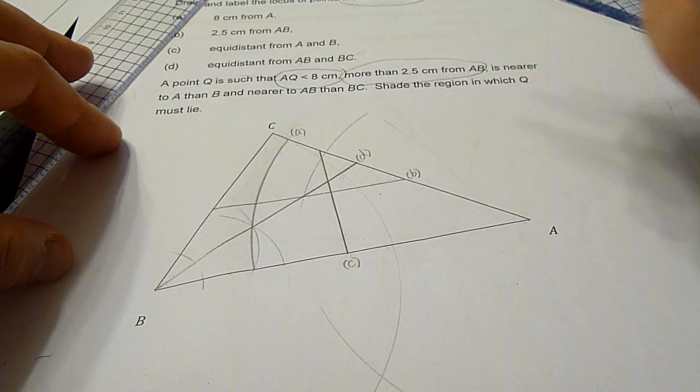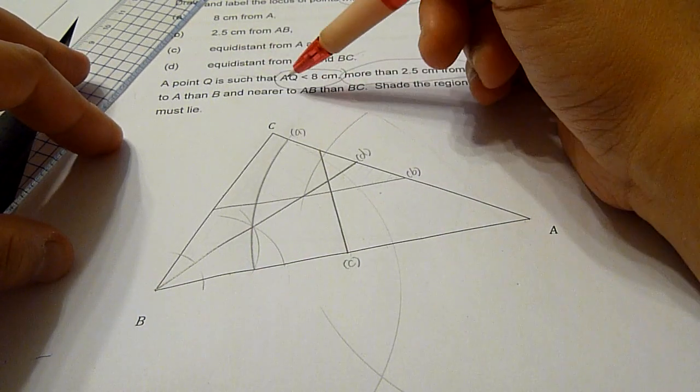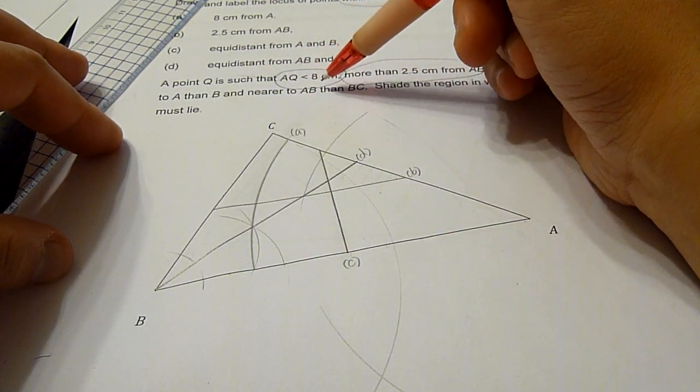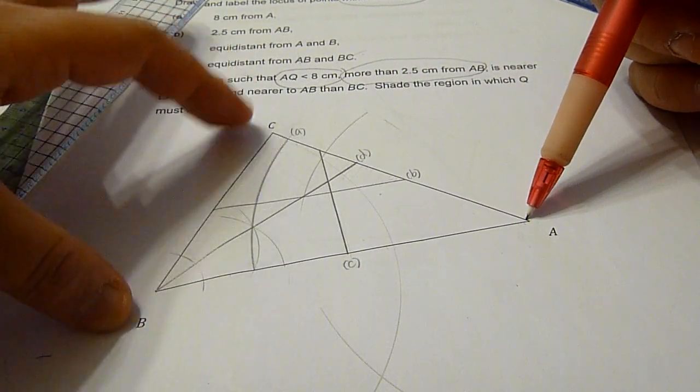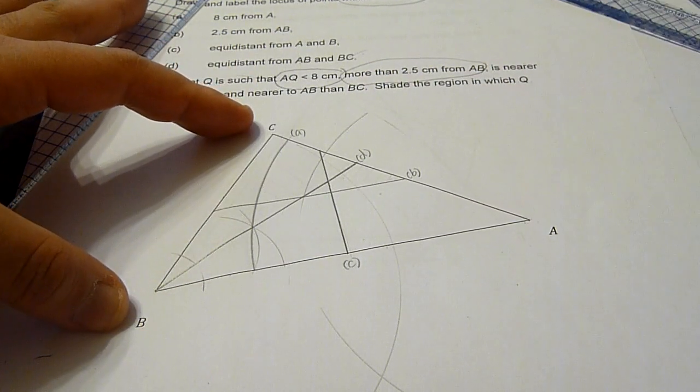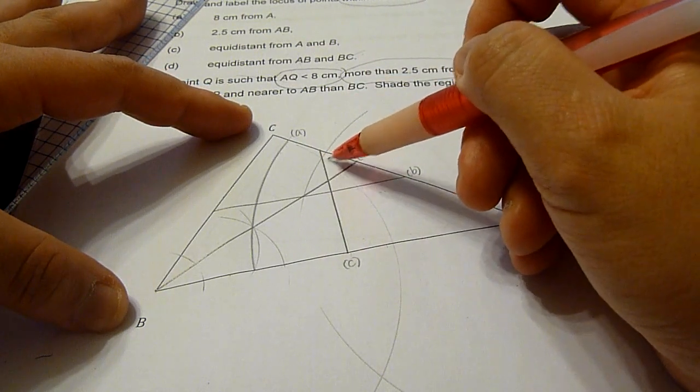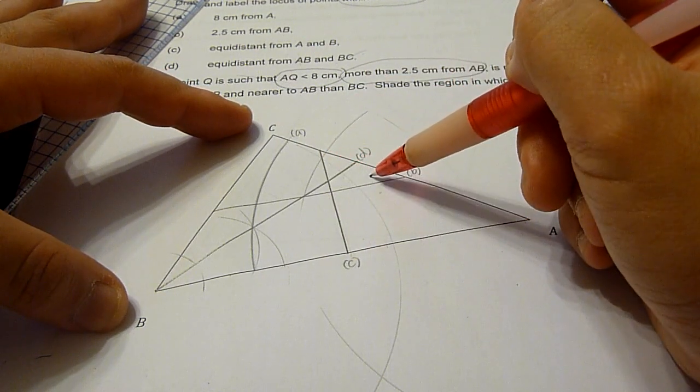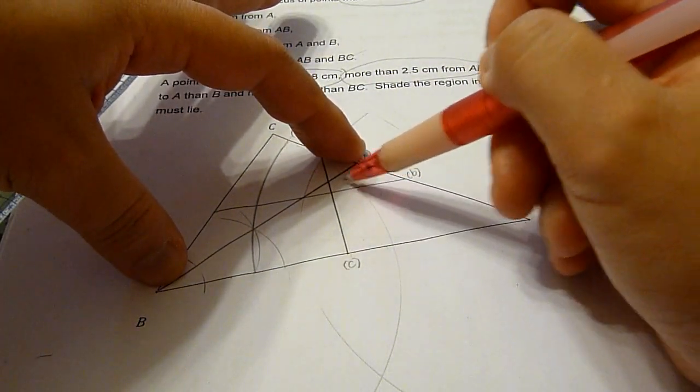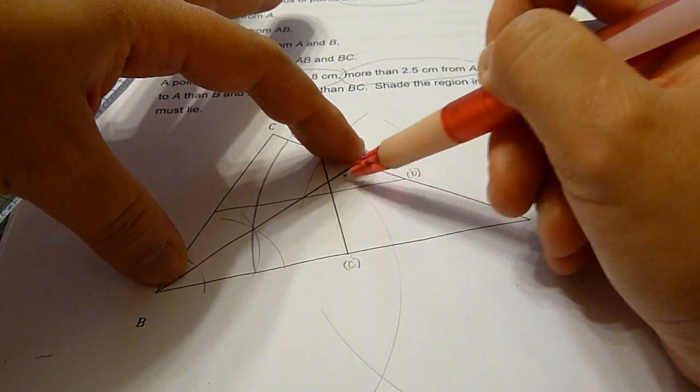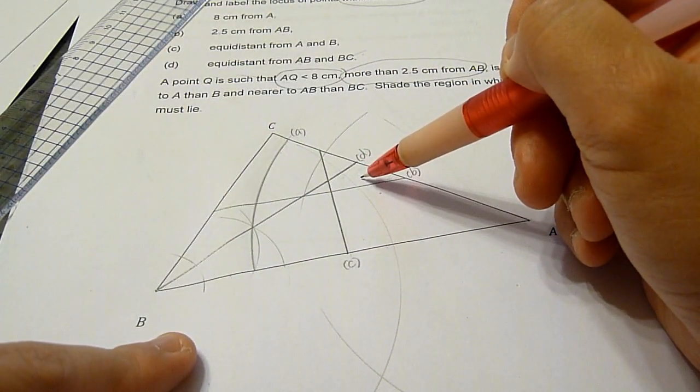And next, it is nearer to AB than BC. Now, AB is here, BC is here. Since we identify the region here, we have the angle bisector that tells us this side would be closer to AB than BC.